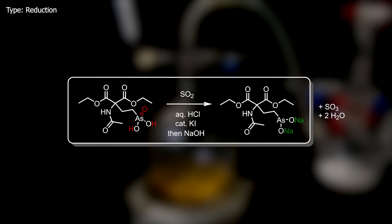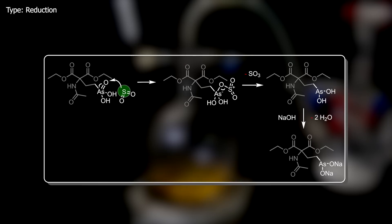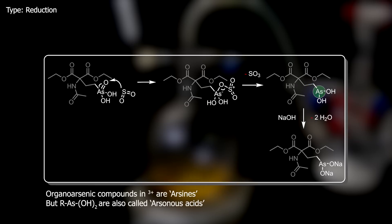In this reaction, the arsenic is reduced by sulfur dioxide from its 5-plus to 3-plus oxidation state. A lone electron pair from the sulfur of sulfur dioxide attacks the double-bonded oxygen, of which one pair of bonded electrons moves onto the arsenic, reducing it to its 3-plus state. This leaves the arsenic with a formal negative charge and the sulfur with a positive charge. To balance those charges, the remaining arsenic-oxygen bond moves to form a sulfur-oxygen double bond, kicking off sulfur trioxide, which immediately reacts with water to form sulfuric acid, leaving us with the corresponding arsine compound.